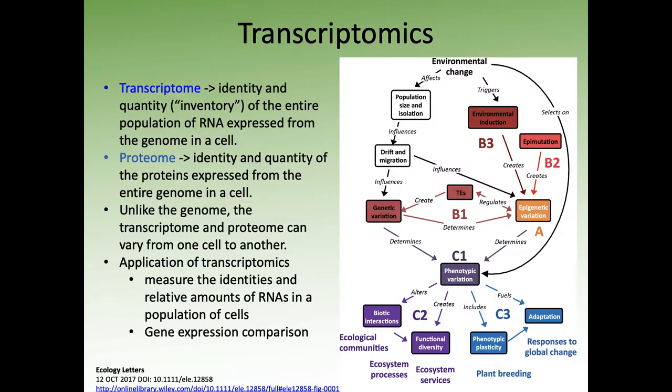If we think about what a transcriptome is, it's the identity and quantity — basically the inventory of the entire population of RNA expressed from the genome in a cell. You might also have heard of the term proteome, which refers to a similar definition but for proteins: the identity and quantity of proteins expressed from the entire genome in a cell.